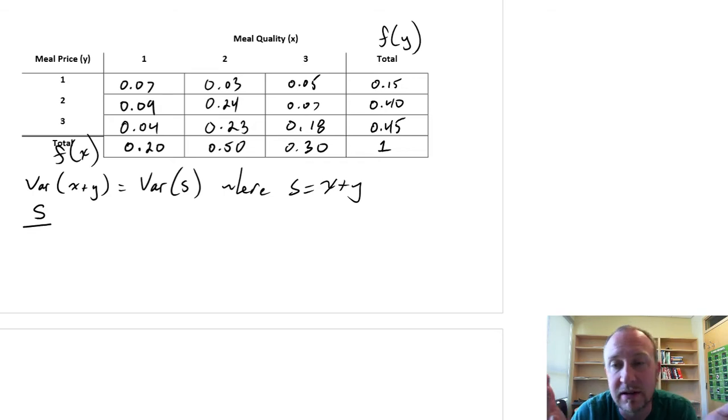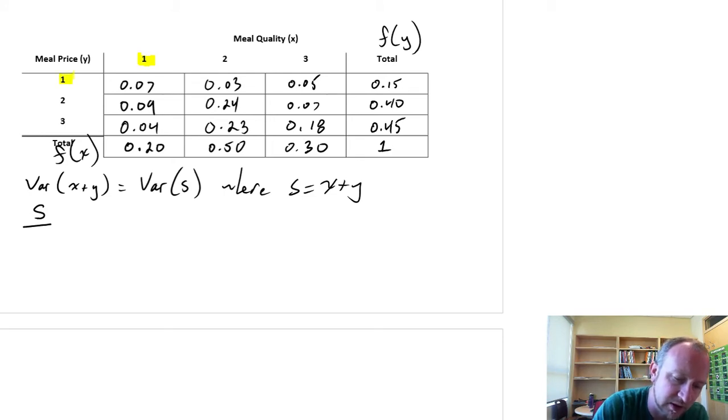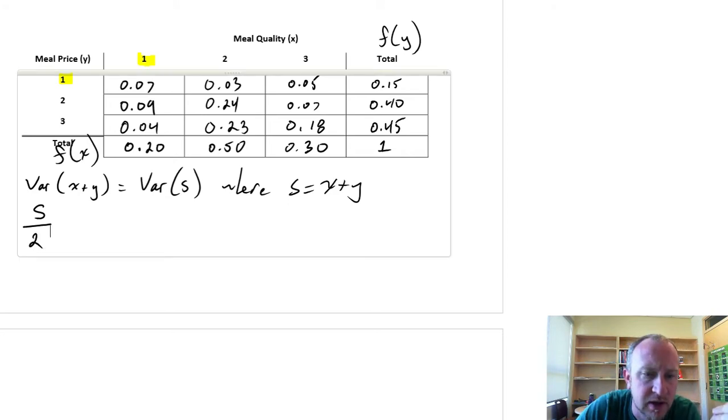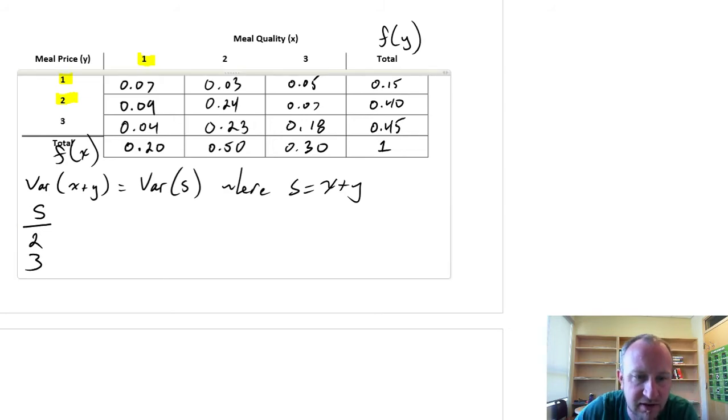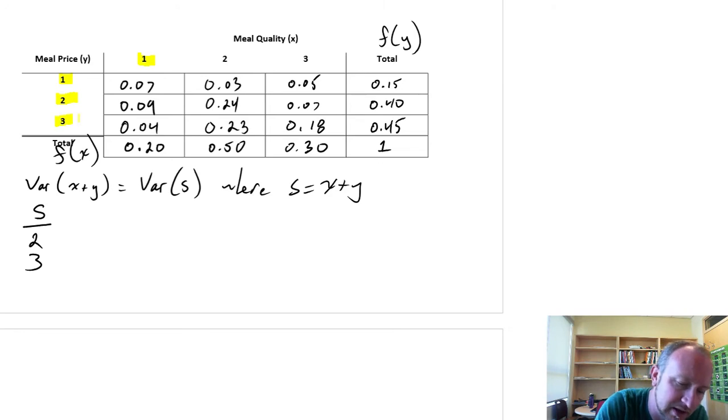So s is equal to x plus y. We just go through what are the values that x can take and add them to the values that y can take. So if x is equal to 1, what are the possible values for x plus y? Well we have 1 plus 1, so that means s can be a value of 2. If x is equal to 1, y can be 2, so there we have a value for s is 3. And if x is 1, y can be 3, so now we have a value for s of 4.